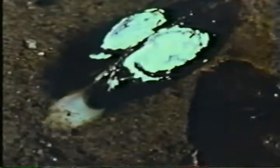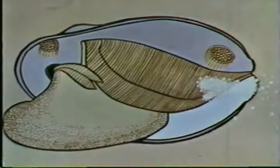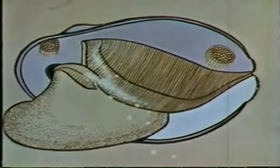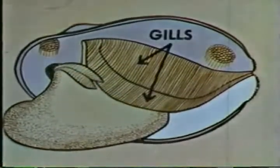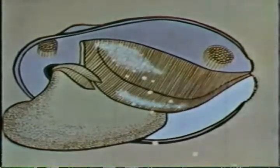The clam uses its foot to dig into sand quite often, and once it's in there the clam feeds by filtering water between its shells. The food particles are filtered out of the water which comes into the shell by the gills. So the clam is a filter feeder.